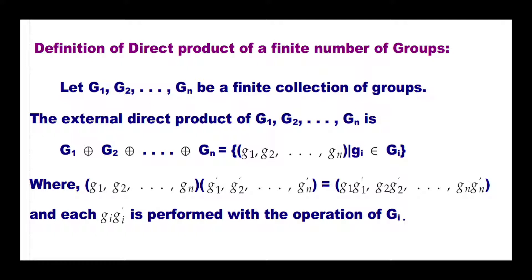Let G₁, G₂, …, Gₙ be a finite collection of groups. The external direct product is defined by the n-tuple (g₁, g₂, …, gₙ) such that gᵢ belongs to Gᵢ. The product is defined by (g₁, g₂, …, gₙ)(g₁', g₂', …, gₙ') = (g₁g₁', g₂g₂', …, gₙgₙ').